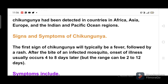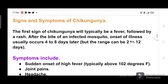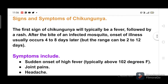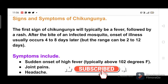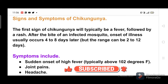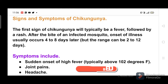Signs and symptoms of chikungunya. The first sign of chikungunya will typically be a fever, followed by a rash. After the bite of an infected mosquito, onset of illness usually occurs 4 to 8 days later, but the range can be 2 to 12 days.